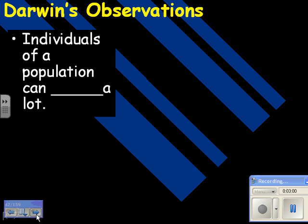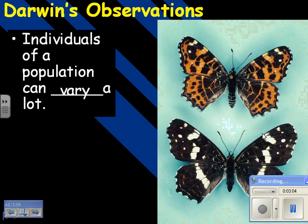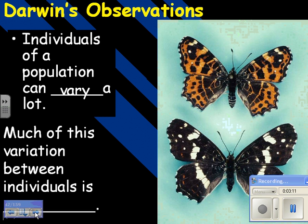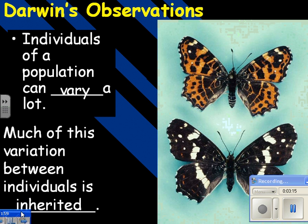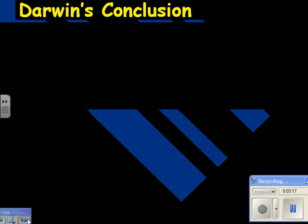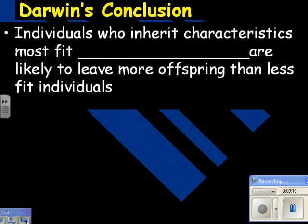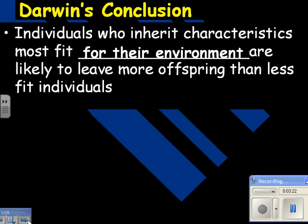More observations: individuals of a population can vary a lot. For example, this butterfly is brown and black, and this one's black and white, but they're the same species. Much of this variation between individuals is inherited. The individuals who inherit characteristics most fit for their environment are likely to survive and leave more offspring than less fit individuals.